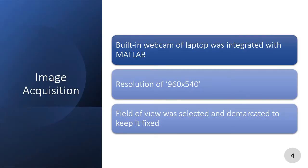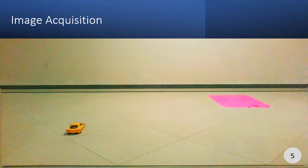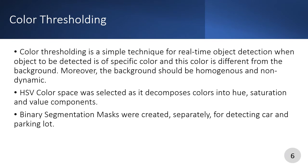I would now like to talk about our image processing algorithm that we are using to provide feedback to the fuzzy logic controller. We have used the built-in webcam of our laptop for image acquisition and specified a resolution of 960 by 540. This is the field of view that we fixed for our project. We have used simple color thresholding techniques for real-time object detection. Binary segmentation masks created using color thresholding allow us to easily separate the car and parking lot from the rest of the frame.